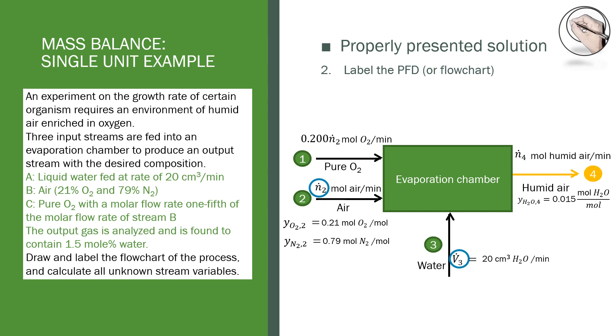The given compositions are in terms of moles. It is common practice to use x for mass fractions and y for molar fractions, followed by the component and the stream number. For example, the molar fraction of water in stream 4 is 0.015. Labeling like this helps to clear up any confusion when you're doing your calculations.